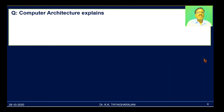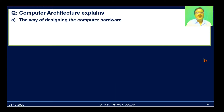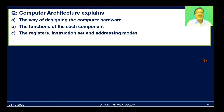The first question is: computer architecture explains — A, the way of designing the computer hardware; B, the functions of each component; C, the registers, instruction set and addressing modes; D, all the above. All three options are correct, so D is the right answer.